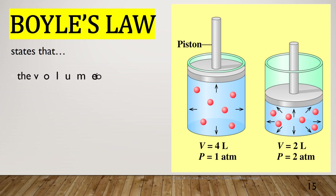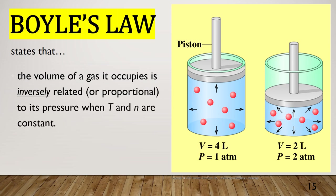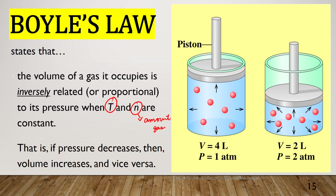Boyle's Law states that the volume of a gas is inversely proportional to its pressure when temperature (T) and amount of gas (n) are constant. If pressure decreases, volume increases and vice versa. In this illustration, if volume decreases from 4 liters to 2 liters — that is, decreased by half — then pressure doubles from 1 atmosphere to 2 atmospheres.